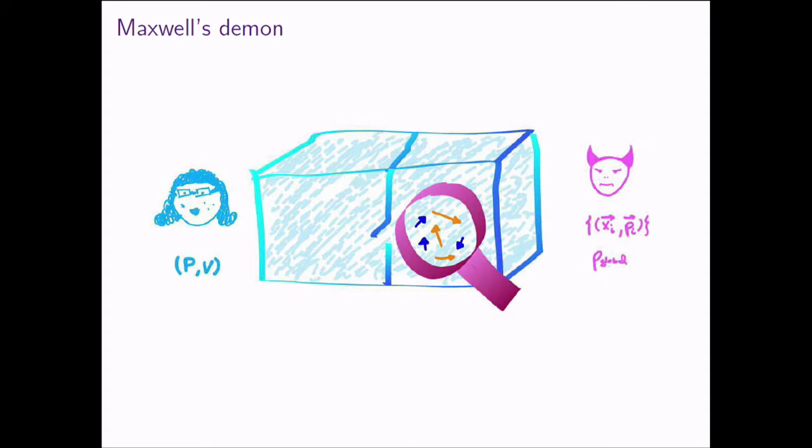You might think that thermodynamics had nothing to do with information — you're trying to move trains, what does it matter what information you have about the system? The first example where this started to play a role was Maxwell's Demon. Most of you are already familiar with this paradox. Imagine you have a box filled with some gas, and an observer, Alice, who can only see its pressure, volume, and temperature.